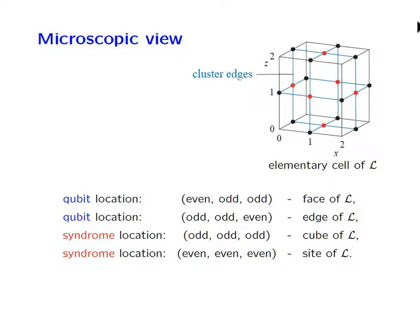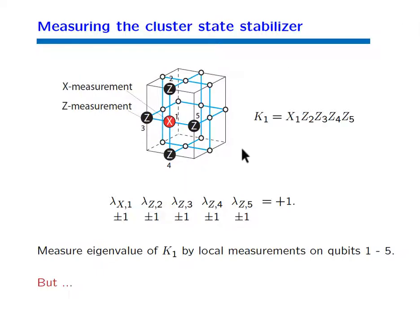Now we want to do error correction with the cluster state. Here you see a cluster state stabilizer — more exactly a generator of the stabilizer — consisting of a sigma X Pauli operator in the middle with sigma Z's tensored onto the nearest neighbors. In principle you could measure that stabilizer generator by measuring all five Pauli observables locally and post-processing the outcomes. Each measurement outcome individually is plus or minus one, but they must multiply to plus one — that's the stabilizer condition — allowing you to identify errors. However, there is a complication.